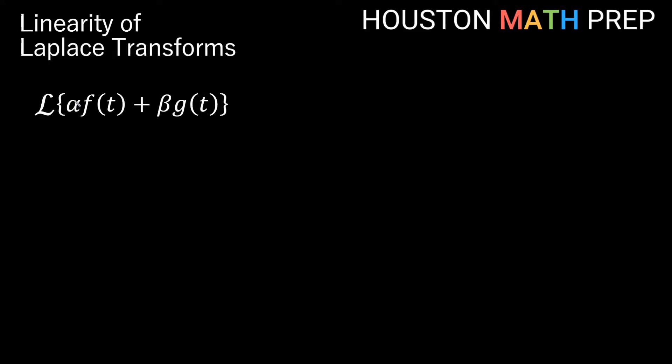If we have the Laplace Transform of some constant multiple of f(t) plus some other constant multiple of a function g(t), we just want to be able to think of these simply and linearly. We'll show you very briefly why you can do that looking at the integral definition of the Laplace Transform. So if we have some constant multiple of f(t) plus some constant multiple of g(t), the Laplace Transform will be the definite integral from zero to infinity of those things times e to the negative st dt.